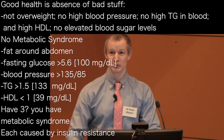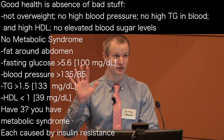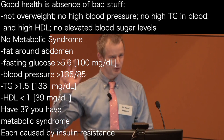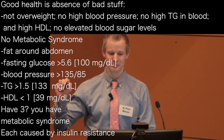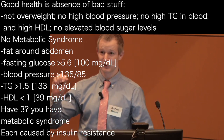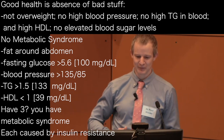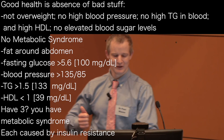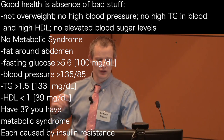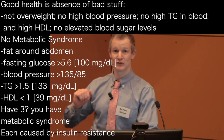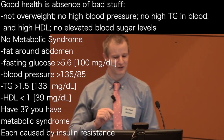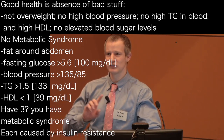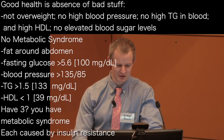Metabolic syndrome to a doctor has five features. If you have three of those five, I will diagnose you with metabolic syndrome. That includes if you have weight around your abdomen, if your fasting glucose is over 5.6, if your blood pressure is over 135 and 85, if your triglycerides are over 1.5, if your HDL is less than 1. If you tick three of those boxes, you have metabolic syndrome.